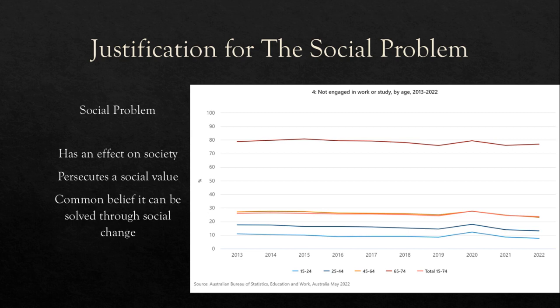Demographic-based statistics allow us to see the effect educational inequality has on Australians. In 2022, 7.6% of Australians between the age of 15 to 24 were not engaged in work or study, along with 13.1% of those between the age of 25 to 44, as stated by the Australian Bureau of Statistics. Other data from the ABS in 2022 shows that 35.5% of students were enrolled in non-government education. Of the government educational facilities attended by the other 64.5% of students, 41% can be categorised as disadvantaged schools.